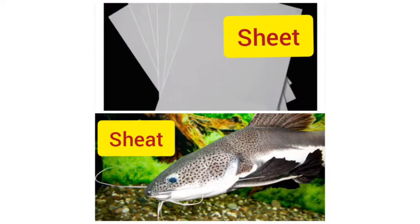Sheet — S-H-E-E-T. Sheet means a piece of paper or a bed sheet — a piece of cloth. That is called sheet, S-H-E-E-T. The next word is also spelled S-H-E-E-T but means a kind of fish. Both sound the same but have different meanings.